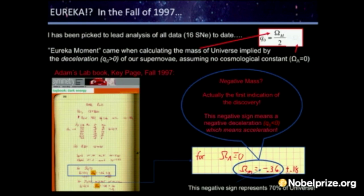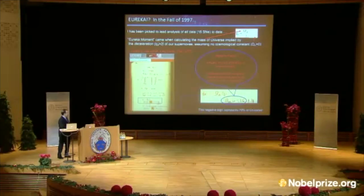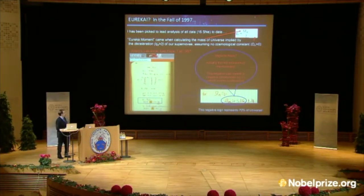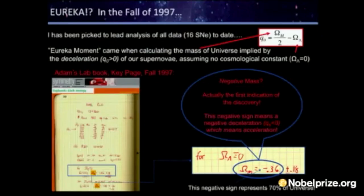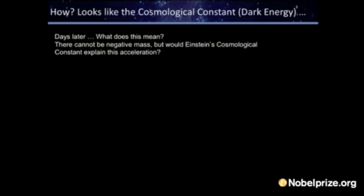When you ask a computer a dumb question, you get a dumb answer, which is that the universe would have to have negative mass. The real reason is because I assumed this thing that Brian had described — this cosmological constant — didn't exist. So I quickly realized that the other way to get this number on the left to be negative, for the universe to accelerate, is to have an overwhelming amount of this term on the right: Einstein's cosmological constant. And so a few days later...